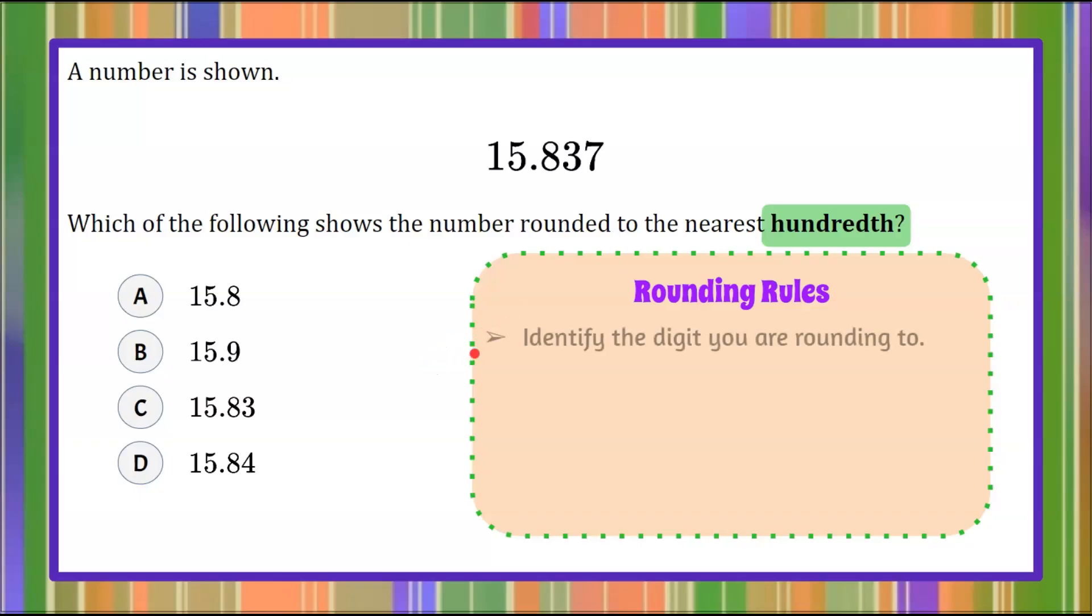Step one is to identify the digit we are rounding to. Hundredth is where we're rounding to, so we identify the hundredth digit in our value, which is the three. That means our decimal will end after that three.